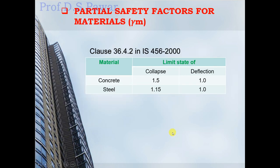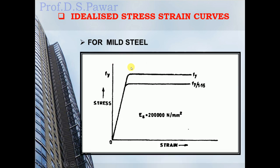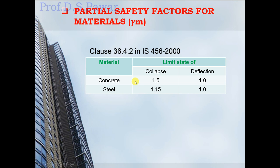Similarly, partial safety factors are applied to materials, as per clause 36.4.2 of IS 456-2000. For concrete in the collapse state, the strength of concrete is divided by the partial safety factor 1.5. For steel, the partial safety factor for material is also 1.15, and for deflection, partial safety factor for both concrete and steel is 1.5.